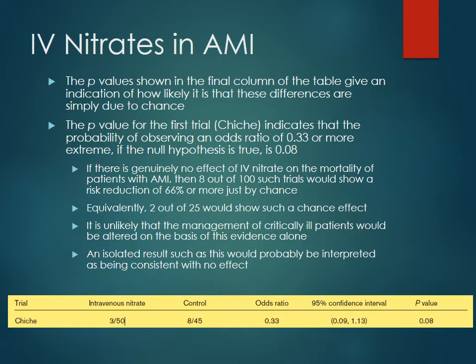The p-values shown in the final column are really just going to show us how likely it is that the differences we're seeing between the nitrate group and the control group are simply due to chance. Going back to the Cheech trial, even though the odds ratio looks protective at 0.33, we're not going to be able to reject the null hypothesis because the p-value does not achieve significance. Because the confidence interval contains a value of one, we can automatically rule out rejecting the null hypothesis. In other words, if you were to carry out this trial a hundred times, eight out of a hundred times you would end up having at least an odds ratio of 0.33 just by chance alone — so this is just too likely to be due to chance.